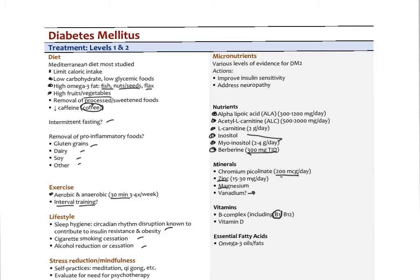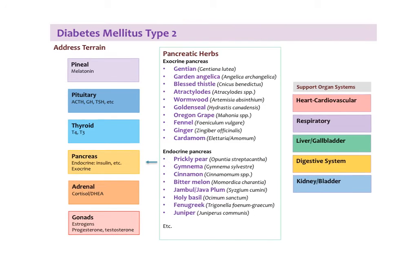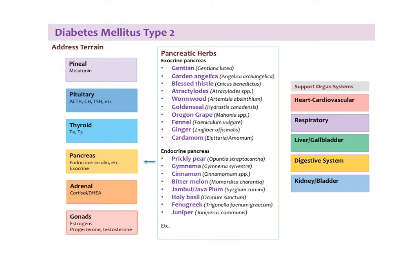That summarizes level 1 and 2. Next, herbal therapies as part of level 2. Choosing herbal therapy for diabetic patients is complex. A good starting point is herbs that address either the exocrine or the endocrine pancreas. Exocrine pancreatic herbs increase pancreatic enzyme secretion and could improve beta cell function — including gentiana, garden angelica, blessed thistle, atractylodes, wormwood, goldenseal, Oregon grape (both containing berberine), fennel, ginger, and cardamom. These are typically quite bitter and taken in low doses.